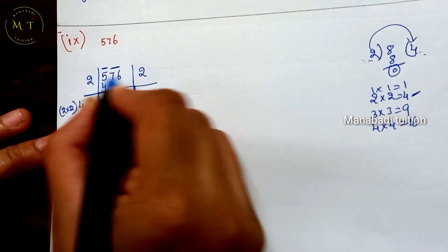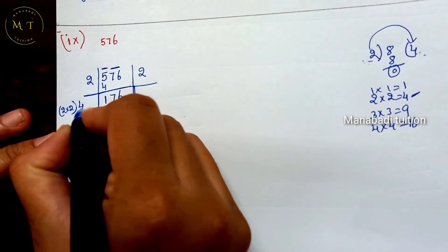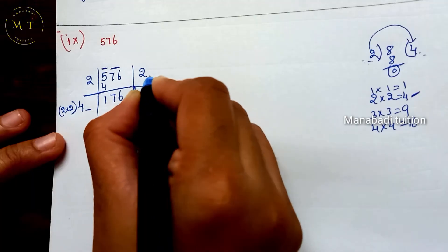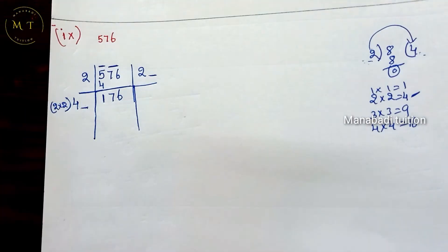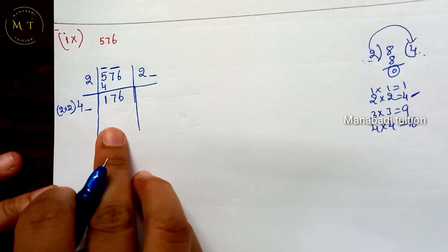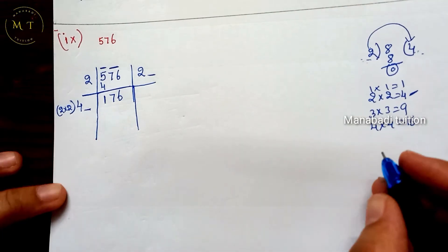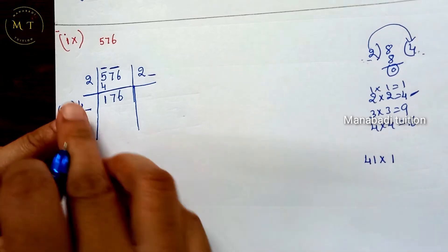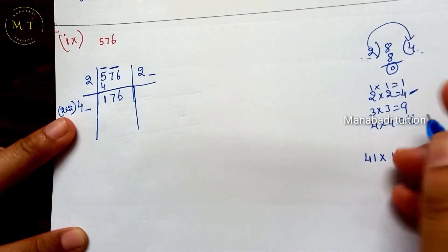Now you multiply the number here to the same number. We multiply the number here — the number is the same. If you multiply, the remainder is 0. Okay. Here is 4, here is 41. Suppose you have 1, 1, 3. Here is 41.